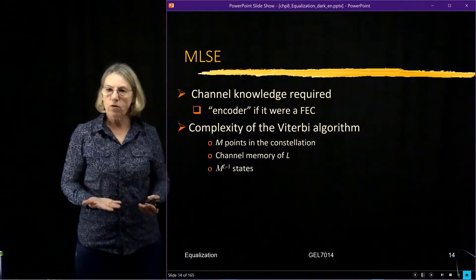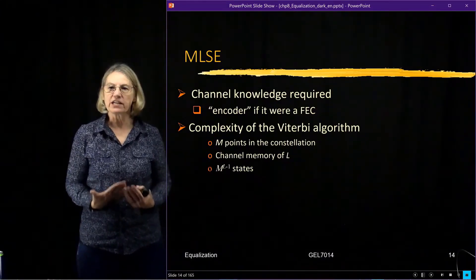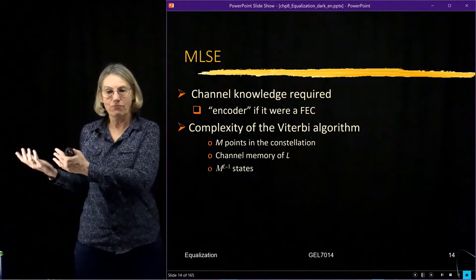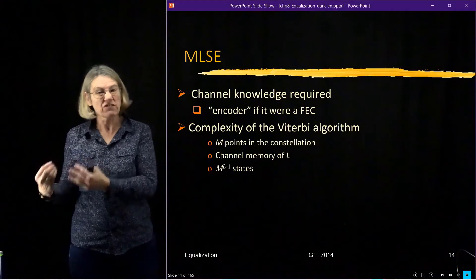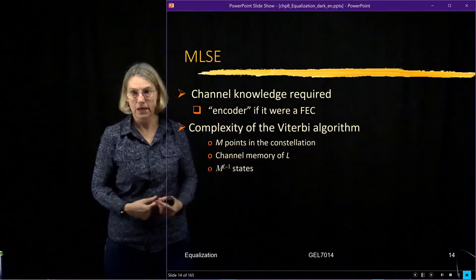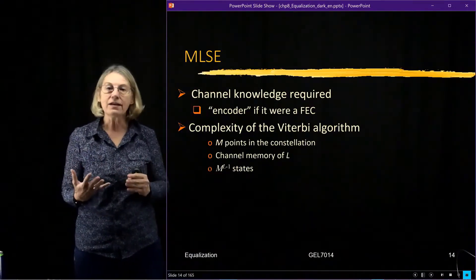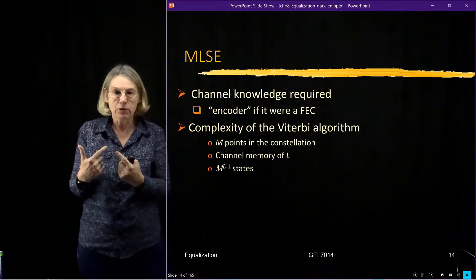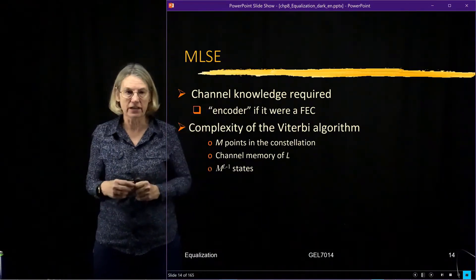One thing we know about the maximum likelihood sequence estimator is we need knowledge of the channel in order to exploit it. If we were doing a forward error correction, we would have at the transmitter an encoder, and it's the knowledge of the encoder that allows us to have a decoder at the receiver. It's kind of the same situation when I do maximum likelihood sequence estimation. I have to have knowledge of what are those interdependencies. I'm going to build a structure that lets me exploit them, but I have to know what they are. So I have to know what the channel is.